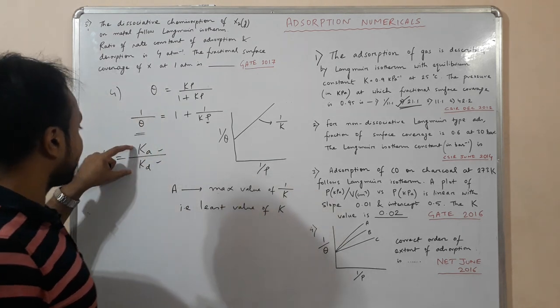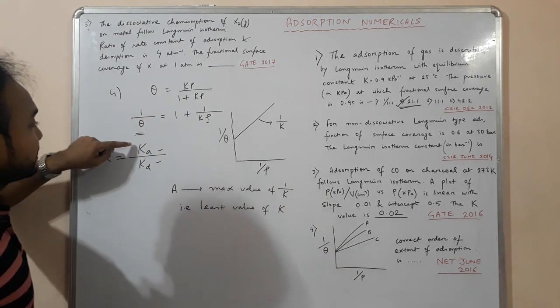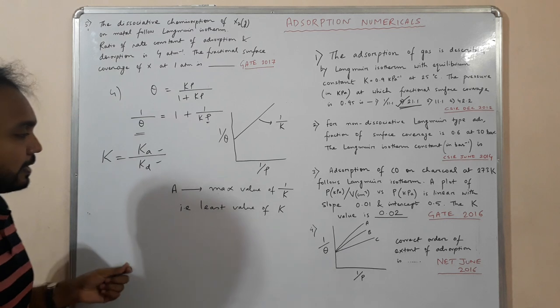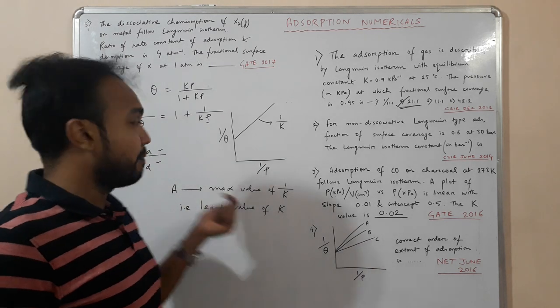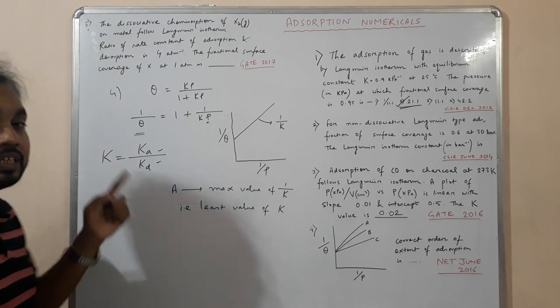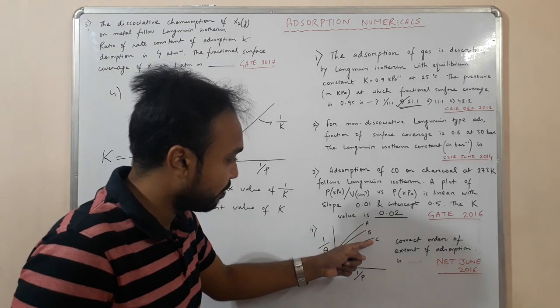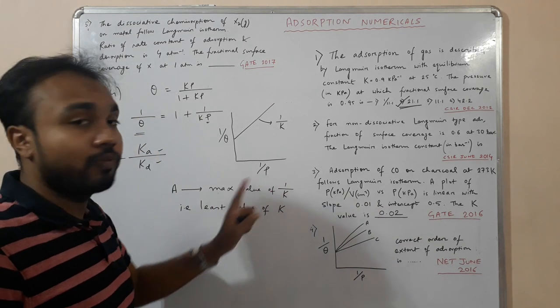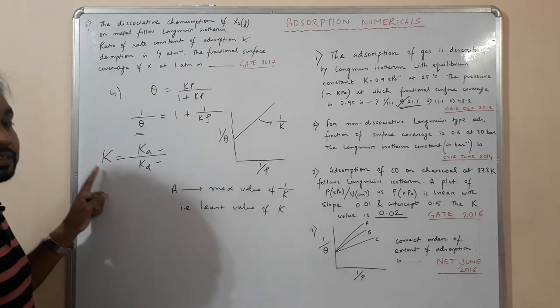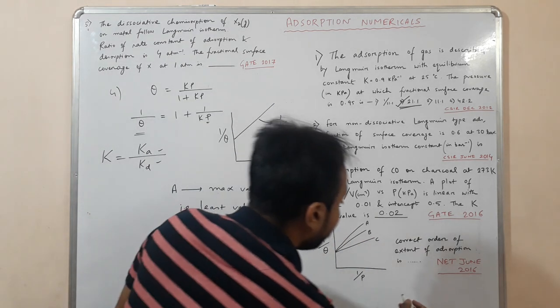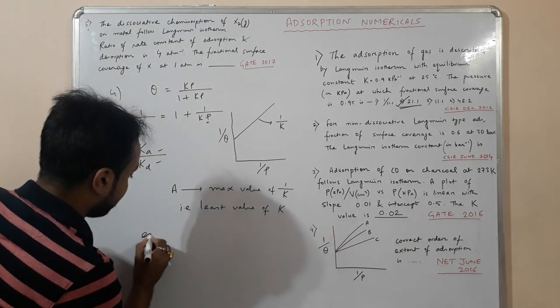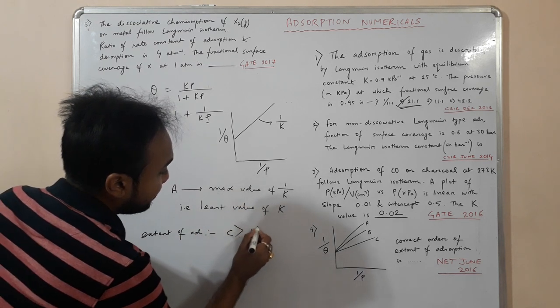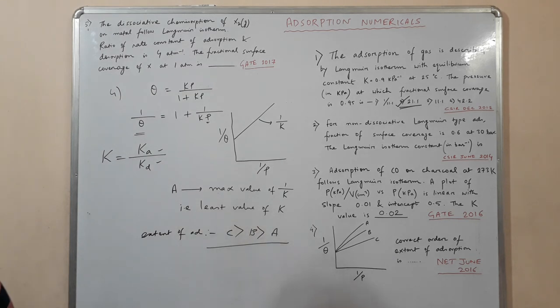Because K value means adsorption by desorption. If K value is more, that means extent of adsorption is more. If K value is less, then extent of adsorption is less. Since A has the least value of K, that implies that the extent of adsorption is least for A, followed by B, followed by C. So C has the most value of K or the least value of 1 by K, and that means C has the extent of adsorption which is more. So the order will be extent of adsorption: C greater than B greater than A.